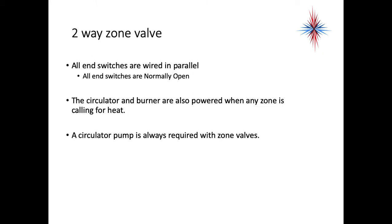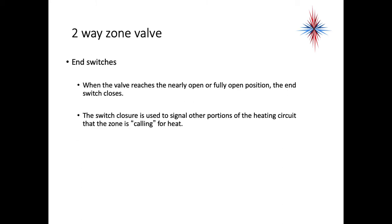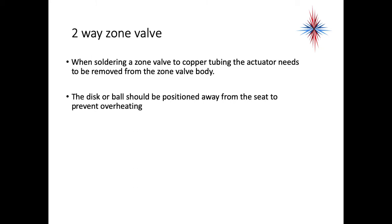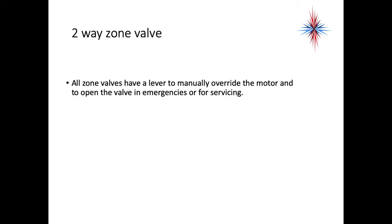All end switches are wired in parallel with each other to whatever they are controlling. The circulator and burner are also powered when any zone is calling for heat. A circulator pump is always required when you have zone valves. Zone valves cannot pump the water around the system. When the valve reaches nearly open or fully open position, the end switch closes. The switch closure is used to signal the other portions of the heating circuit that the zone is calling for heat or calling for cool. Remember, we're not just talking about heating. We can also be talking about cooling. When soldering a zone valve to copper tubing, the actuator needs to be removed from the valve body. The disc or ball should be positioned away from the seat to prevent overheating. All zone valves have a lever to manually override the motor and to open the valve in emergencies or for servicing.